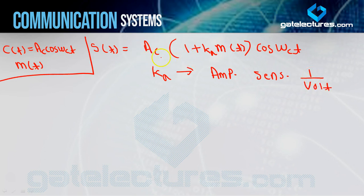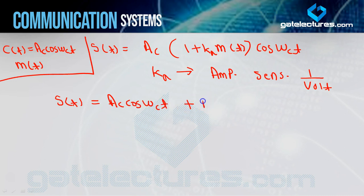All amplitudes such as AC carry the unit of volt. If we open s(t), we get: s(t) = AC cos(ωC t) + AC kA m(t) cos(ωC t). You can see there are two parts: one is AC cos(ωC t), and the other is AC kA m(t) cos(ωC t).